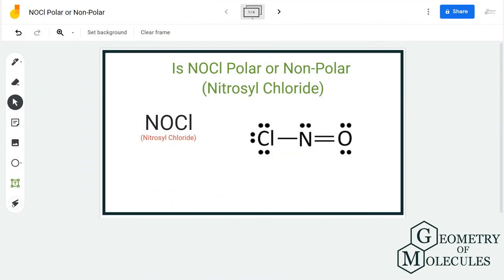Hi guys, today in this video we are going to find out if NOCl is a polar or nonpolar molecule. To find out its polarity, we will first look at its Lewis structure, followed by the arrangement of atoms in the structure, and check if there is a dipole moment in this molecule.